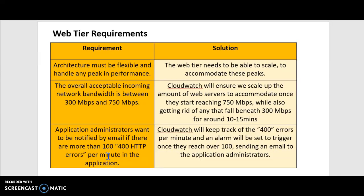In terms of web tier requirements, to solve the problem with flexibility and handling any high peak performance, all you need is scalability — so it's going to be auto-scaling. The problem they're having where they want to keep bandwidth between 300 Mbps and 750 Mbps: I would use CloudWatch to monitor this and scale accordingly. When they start reaching 750 Mbps, spawn more instances; and when they start dropping below 300, have a timeout window of about 10 to 15 minutes and then delete instances.